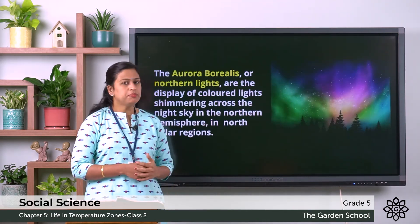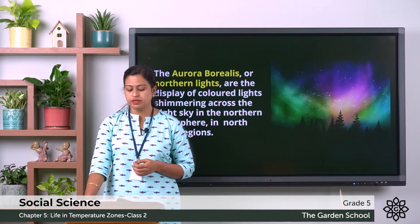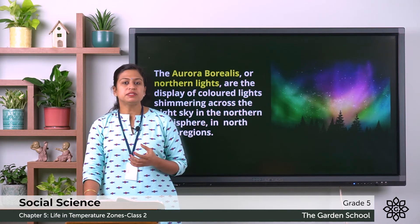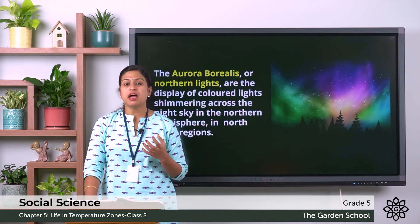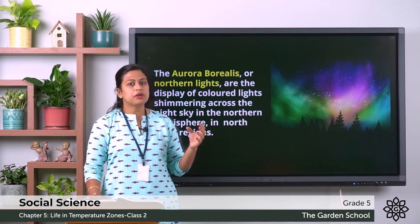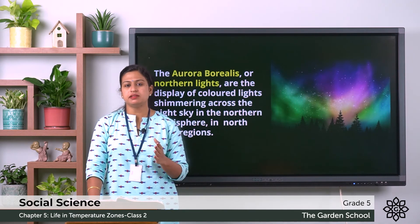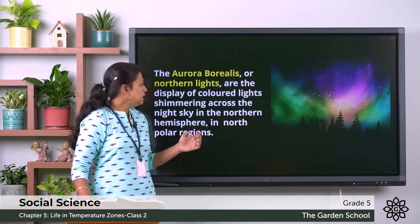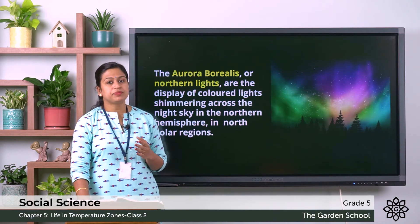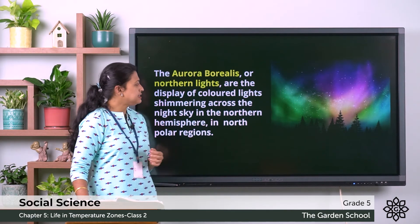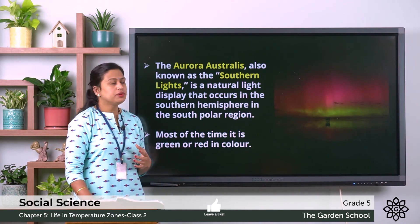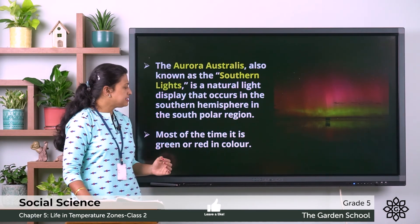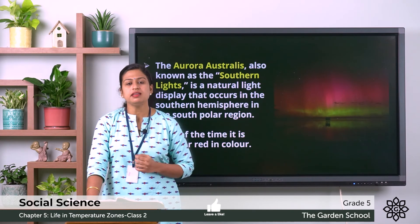In your textbook on page number 41 there is a zoom-in section. In the polar regions, the night sky is sometimes lit up by naturally occurring bright lights. This occurs because of the collision of charged particles of the sun and the atoms of the atmosphere. In the northern hemisphere these lights are known as aurora borealis or the northern lights, and in the southern hemisphere they are known as aurora australis or the southern lights, and they are mostly green or red in colour.